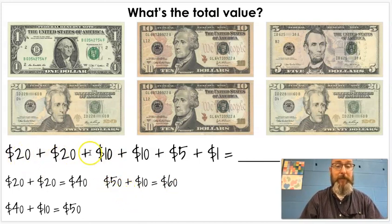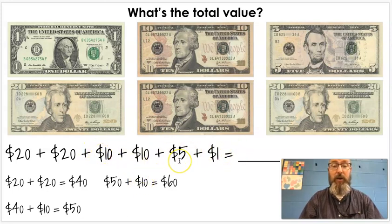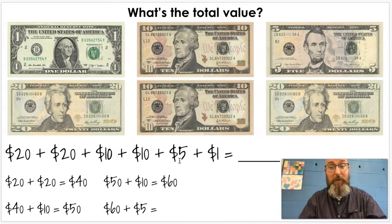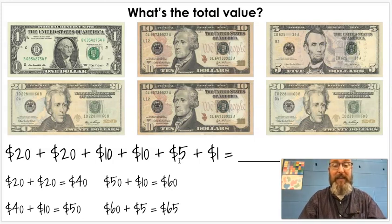We're moving pretty quick. We've done our two twenties, one ten, and another ten. We just have two more to go. $60 + $5. What would sixty plus five be? Sixty-one, sixty-two... What would it be? Sixty-five. We just have one more to add. That's our one dollar bill. What comes next after sixty-five? Sixty-six.